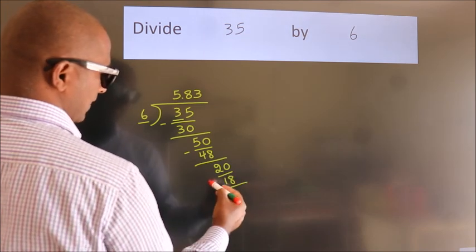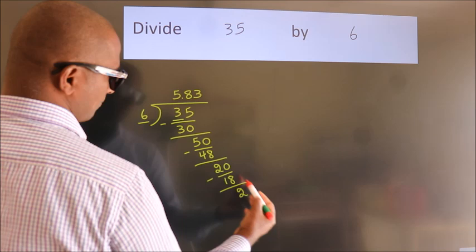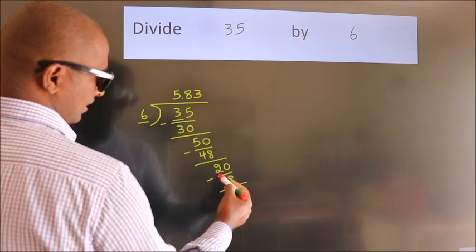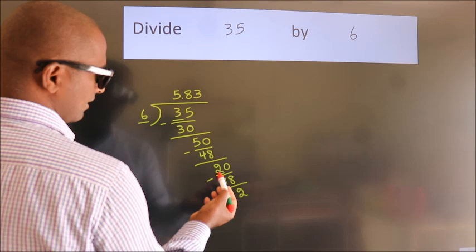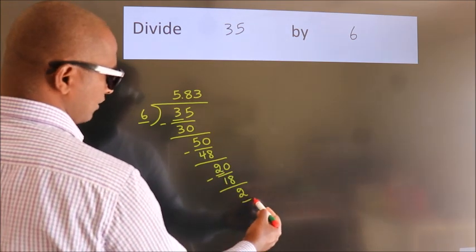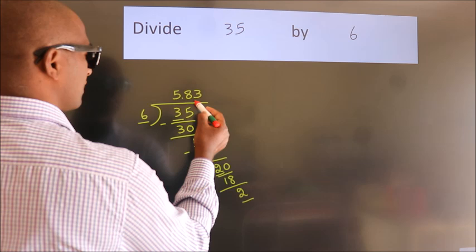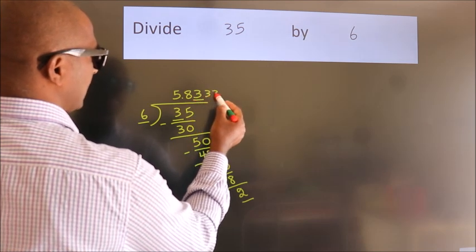Now we subtract. We get 2. Now you observe: we had 2 here, and we got 2 again. That means this number keeps on repeating.